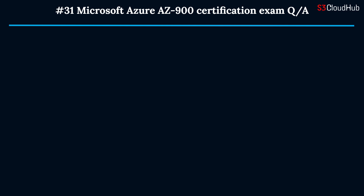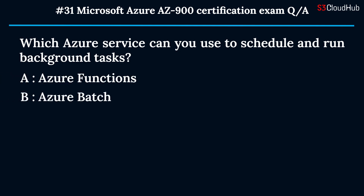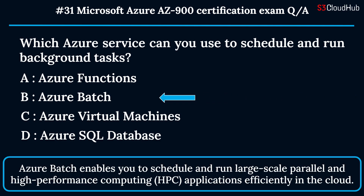The thirty-first question: which Azure service can you use to schedule and run background tasks? Option A: Azure Functions. Option B: Azure Batch. Option C: Azure Virtual Machines. Option D: Azure SQL Database. The correct answer is option B: Azure Batch. Azure Batch enables you to schedule and run large-scale parallel and high-performance computing (HPC) applications efficiently in the cloud.